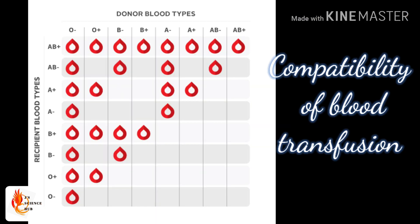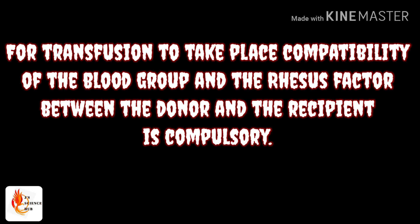This diagram shows you how blood transfusion can take place in humans. After you watch this video you can easily understand this diagram. When transfusing blood we should consider different factors, but the main factors we consider are the compatibility of blood group and the compatibility of the Rh factor.